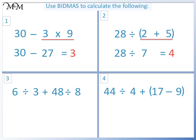Question 3. The first letter in BIDMAS that we have is D for division. We work from left to right. 6 divided by 3 equals 2. 48 divided by 8 equals 6. 2 plus 6 equals 8.